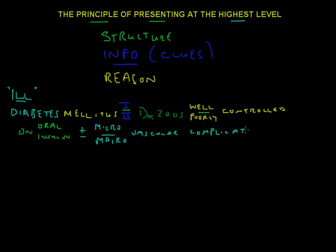Sorry, let me just continue, macro vascular complications. This is a formula to go from a simple word like diabetes to diabetes mellitus type 1 or 2, diagnosed in 2005, well or poorly controlled, on oral insulin or oral treatment or insulin or both, plus or minus micro or macro vascular complications. Now this is a high level diagnosis.